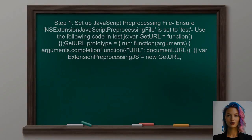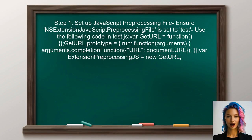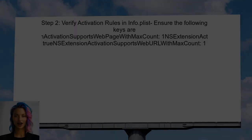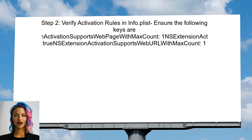To retrieve the URL of the web page when sharing content via the share extension, first ensure that the JavaScript preprocessing file is correctly set up. This file will be responsible for passing the URL back to the extension. Next, check the activation rules in the info.plist file — it's important to confirm that the extension supports both text and web URLs.